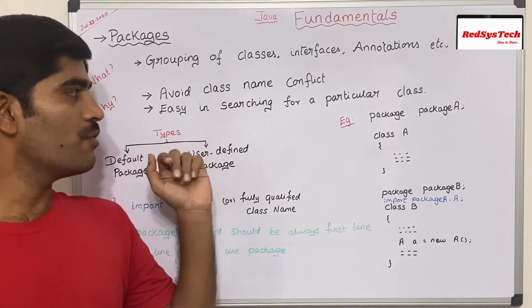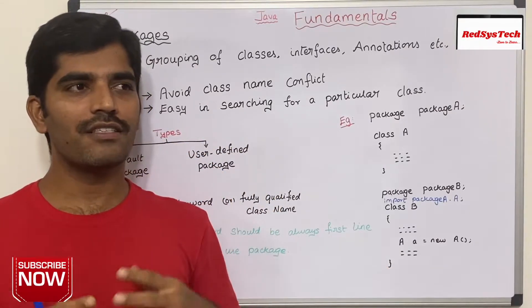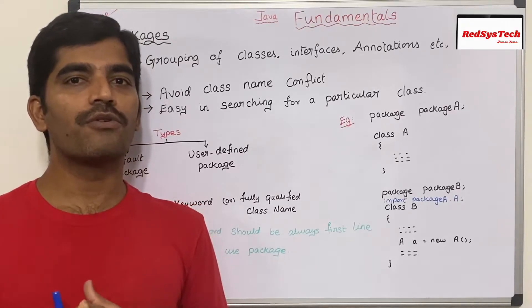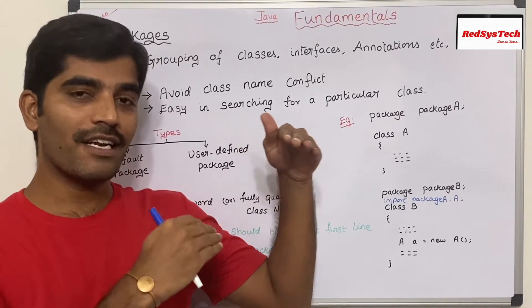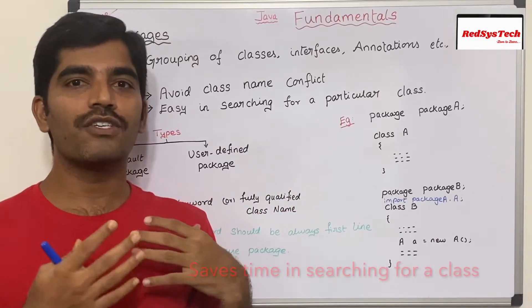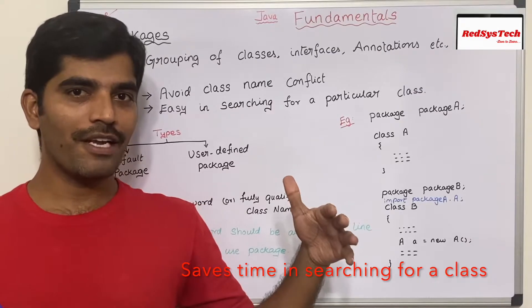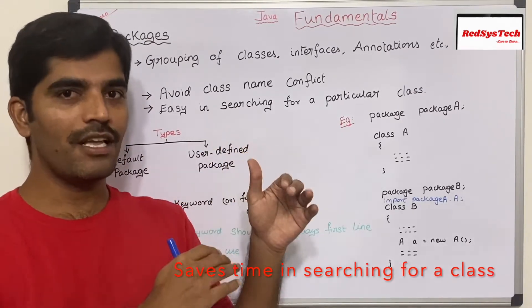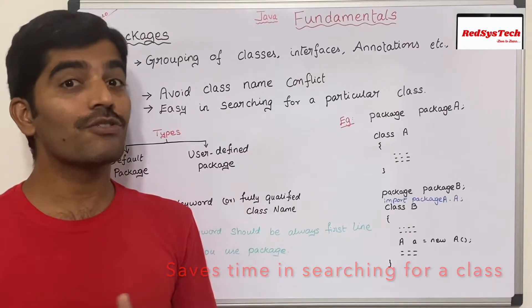The second benefit: let's say in a real-time implementation a client says there is some issue going on and we have to narrow it down. If we categorize the classes within our application, it is very easy to get deeper into that instead of going through all the classes. We just look at the particular set of classes and analyze the issue. Basically it saves a lot of time for developers to debug an issue.